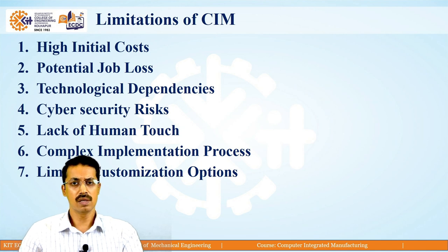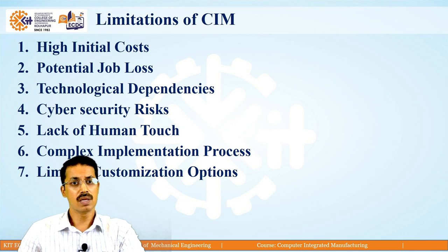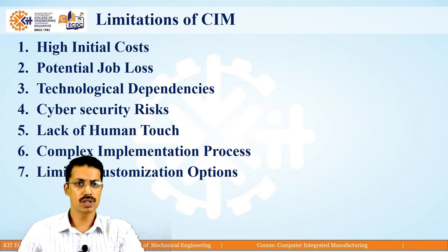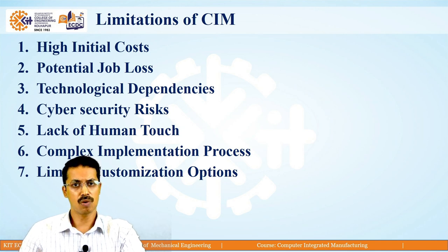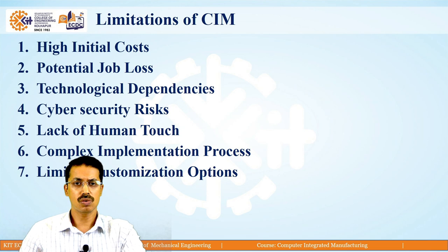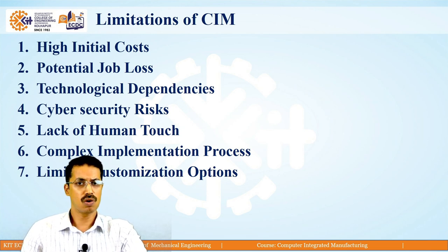Next is cybersecurity risk. As CIM includes networking, all machines and workstations are connected with each other and there is a central server controlling all activity. There is a threat of cyber attack, so you have to protect your system and take proper precautions to avoid it. Next is lack of human touch — as we go for more and more automation, there is a lack of human touch in any activity.